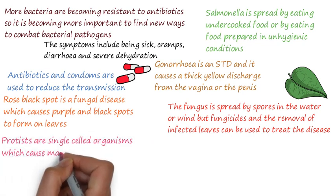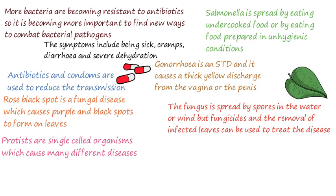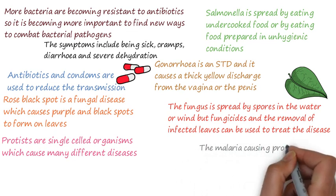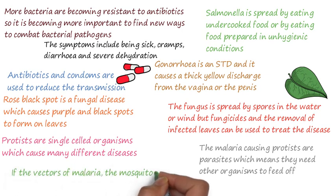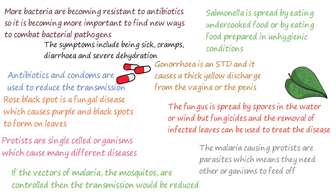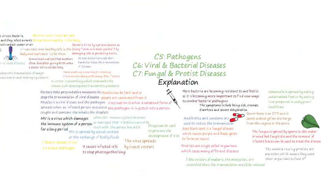Protists are single-celled organisms that cause many different diseases in various organisms, including malaria. These diseases are often particularly concerning, as the malaria-causing protists are parasites, meaning they need other organisms to feed off. The life cycle of the protists includes the mosquito. Malaria causes frequent fever episodes and can be fatal. If the vectors — the mosquitoes — are controlled, transmission would be reduced. This can be achieved by preventing mosquitoes from breeding and using insect nets to avoid being bitten.